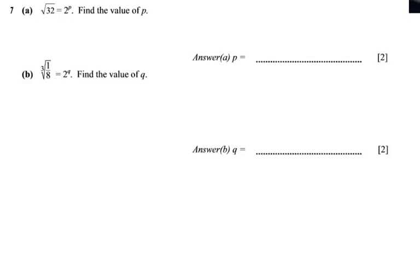This is clearly a Paper 2 question. It says the square root of 32 equals 2 to the power p — find the value of p. This is about indices. The strategy needs to be like this: I have to rewrite the left side of the equation as a term with a base of 2. For instance, if it were 2 to the power 5, then that would equal 2 to the power p, and I can conclude that p equals 5.